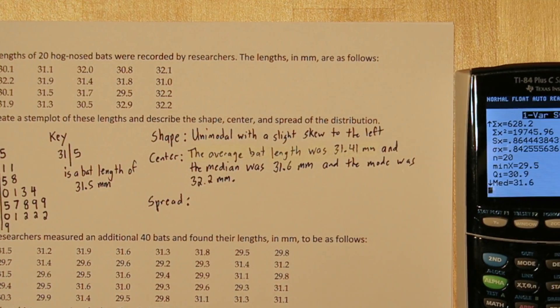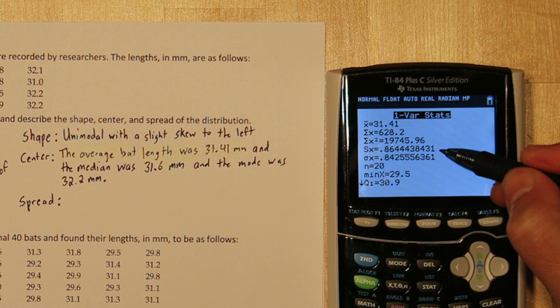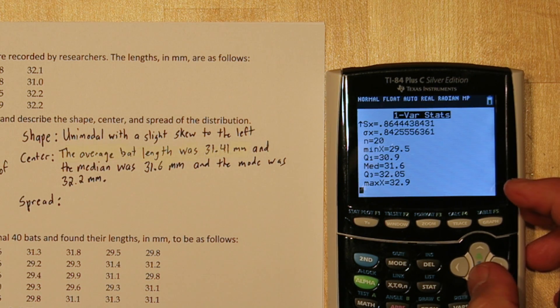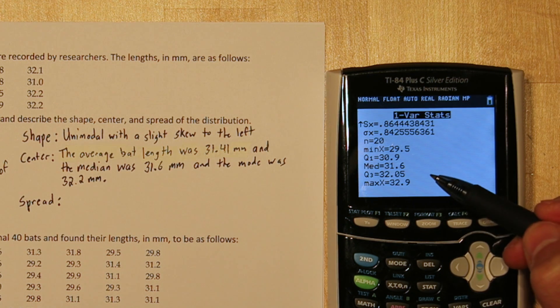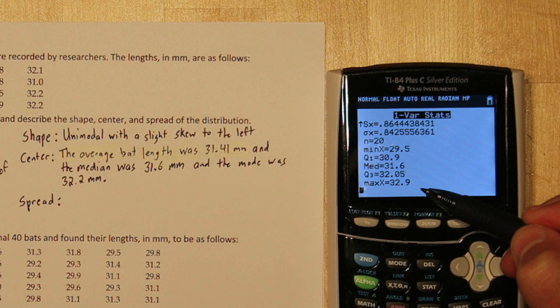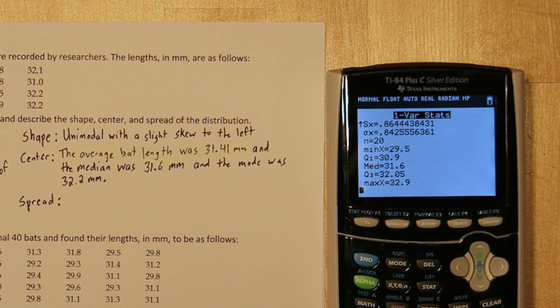Our calculator can also help us with spread. This number right here is the sample standard deviation. That's a measure of spread. But the one we're going to focus on today is the range. So the range is the maximum value minus the minimum value. So 32.9 minus 29.5. So that turns out to be 3.4 millimeters.